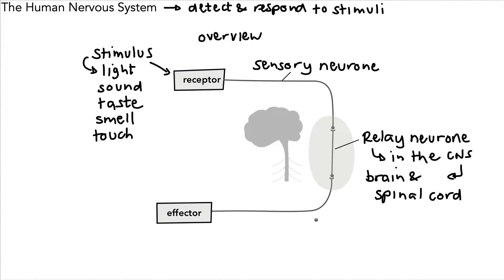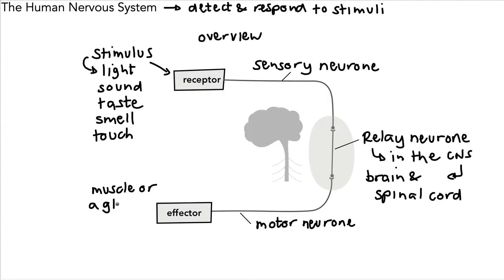The impulse goes from a relay neuron to a motor neuron — and that's just here. The motor neuron will send the impulse to something called an effector. The effector is always a muscle and/or a gland, and that muscle or gland will then bring a response to whatever the stimulus was.